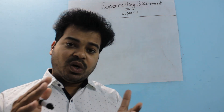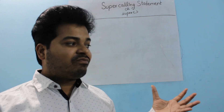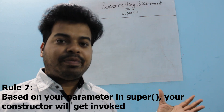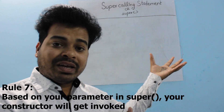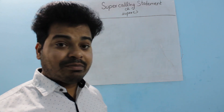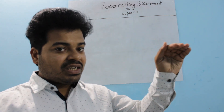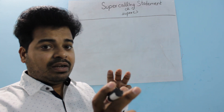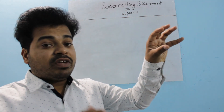Rule number seven: there are two types of super calling statement — a parameterized super calling statement (with a set of parameters) and a non-parameterized super calling statement (without parameters). Based on the parameters passed, the corresponding super class constructor will be invoked. Without parameters it calls the no-argument constructor; with parameters it calls the matching parameterized constructor.